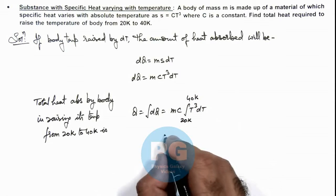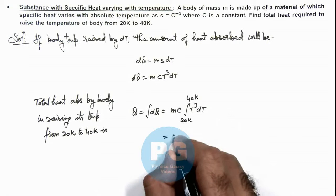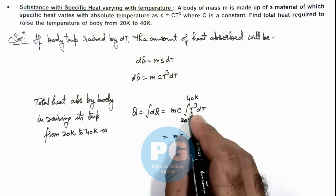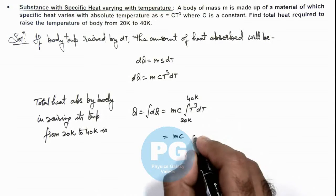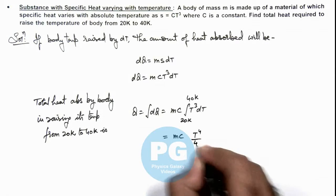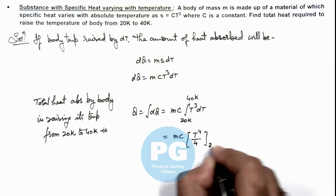So in this situation this will give us the value mc multiplied by: integration of T³ is T⁴/4, and we substitute limits from 20 to 40.